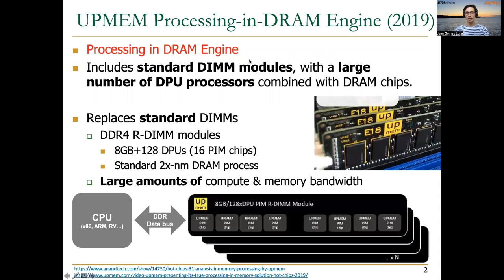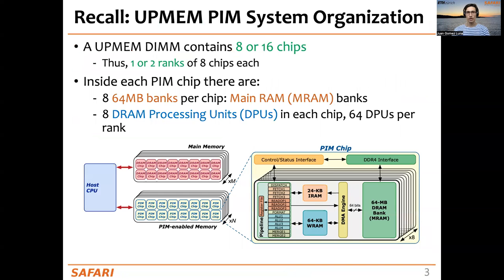Remember that we started this series of lectures about real-world PIM architectures talking about AxDIMM PIM, which is based on DDR4 DIMM modules and basically consists of placing small processors called DPUs inside the DRAM chips. On each AxDIMM DIMM, there are 16 chips, and inside each PIM chip there are eight DRAM banks called MRAM banks and eight DRAM processing units or DPUs.